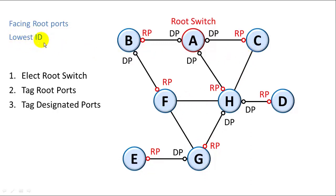So CH will label C as a designated port. FH and FG, the end that attaches to F, is going to be labeled the designated port. And then all the remaining ports are going to be blocked.